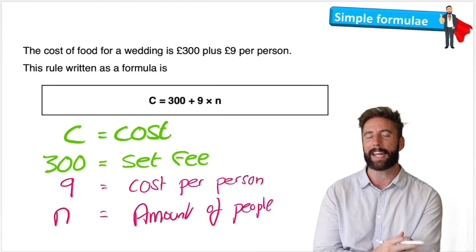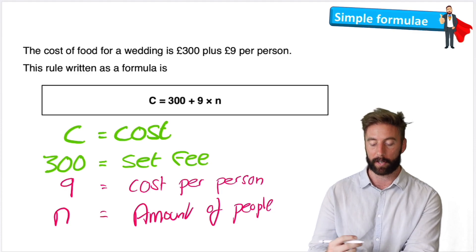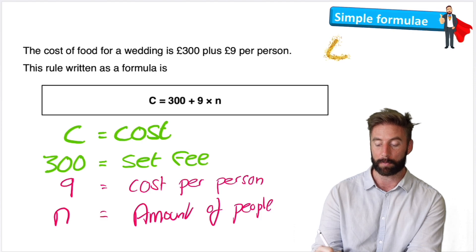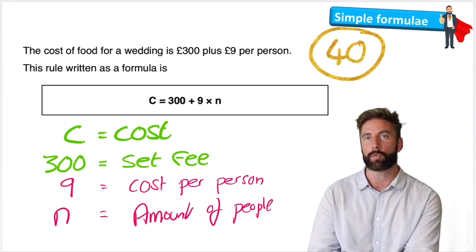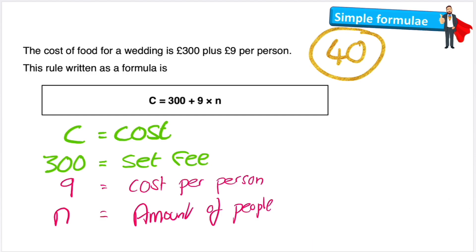So let's try and use this formula in an example. Let's imagine I'm getting married and I'm going to invite 40 people to my wedding. Let's find out how much this wedding is going to cost me. So I'm going to start by writing my formula, which is C equals 300 plus 9 times N. And now what I can do is I can start to input some data into my formula. The data that we have is the 40. We have 40 people coming to my wedding. So I'm going to replace the letter N with the value 40 because remember N stood for the amount of people that are going to come and we know that's now 40. So let's write my second line of my formula, which would be C equals 300 plus 9 times 40.